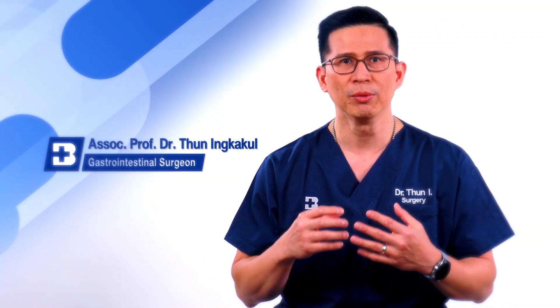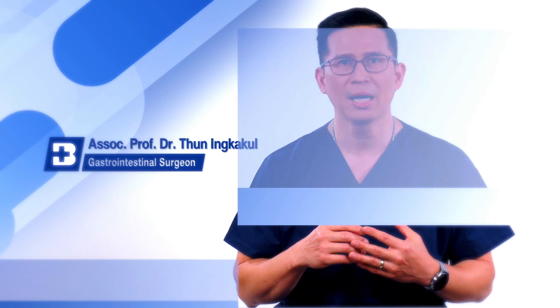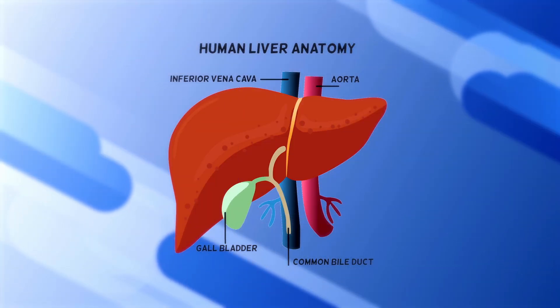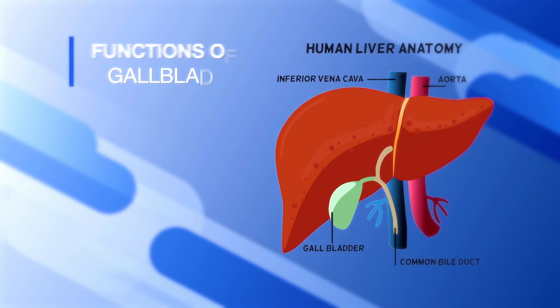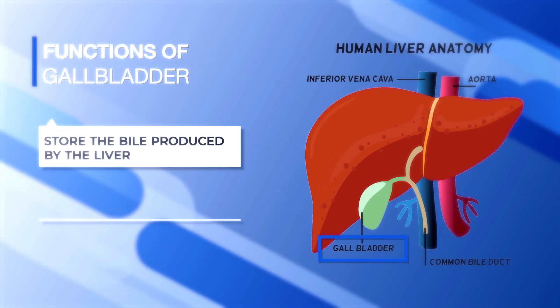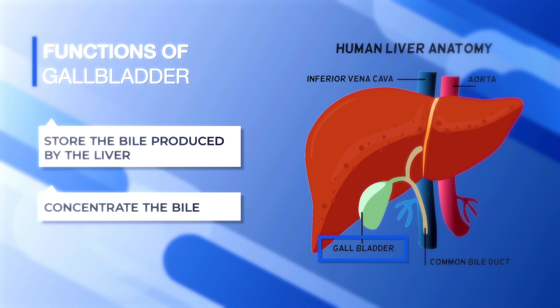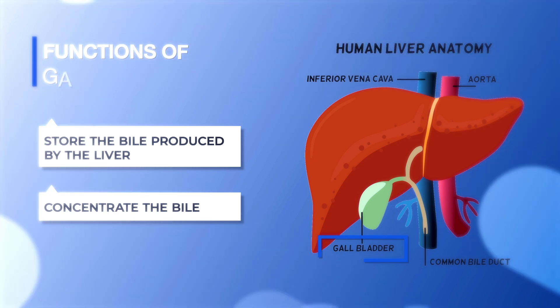The gallbladder is a pear-shaped organ beneath the liver. The liver produces bile and stores it in the gallbladder. The gallbladder not only stores the bile but also concentrates it. When you eat food, the stomach sends a signal to the gallbladder to contract and excrete the bile into the intestine to digest fat.